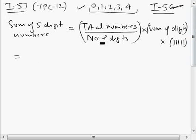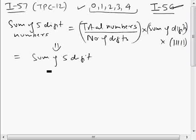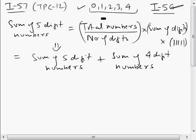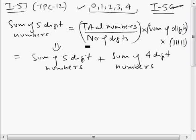If we just follow this approach, we will get the sum of 5-digit numbers plus sum of 4-digit numbers. Because if we apply this formula, it means we are treating 0 and non-zero digits equally — meaning 0 can come at the first place an equal number of times as 1, 2, 3, and 4 — whereas 0 cannot come at the first place, that is the 10,000s place, because if 0 comes in the first place it becomes a 4-digit number.